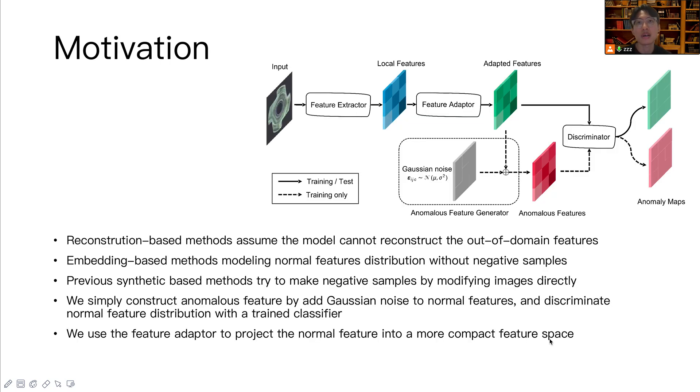The diagram on top shows our model pipeline. It is essentially a classical classification model, including a feature generator. The feature generator tries to generate anomalous features by adding Gaussian losses to the normal features. So a discriminator trained with these features can tell a sample is anomalous or not.